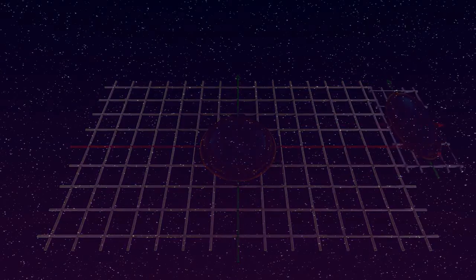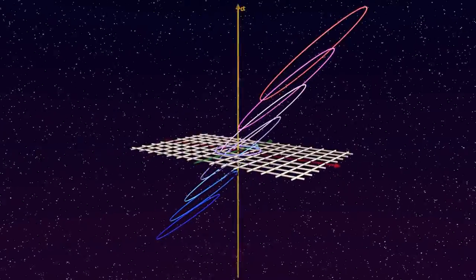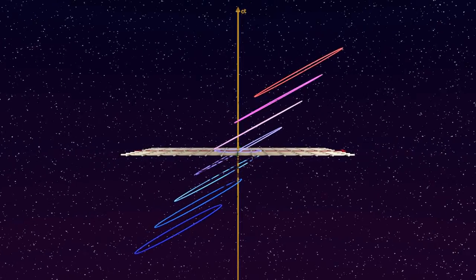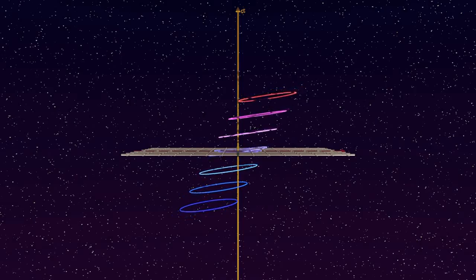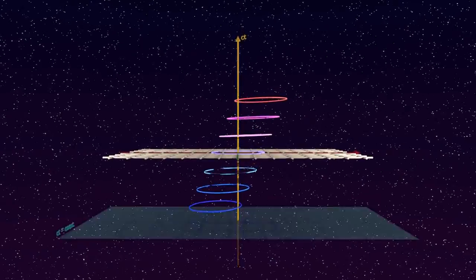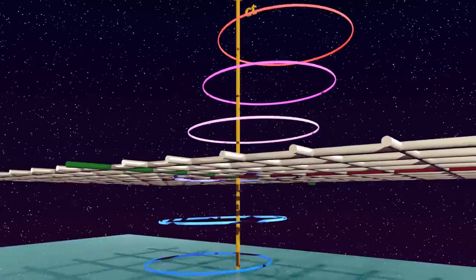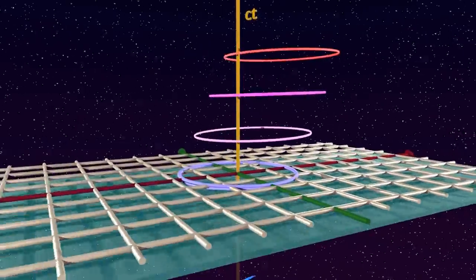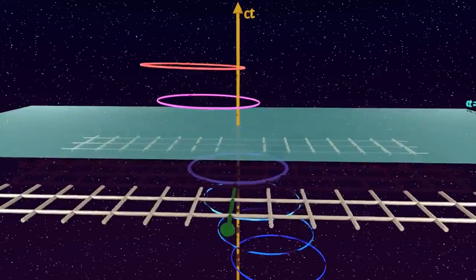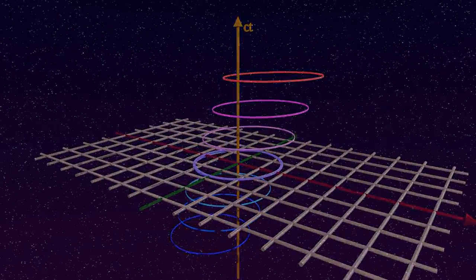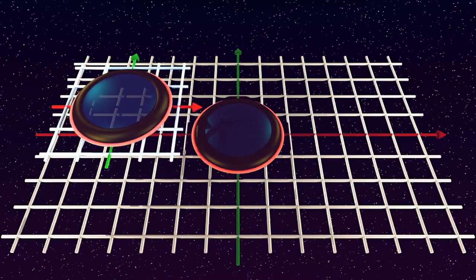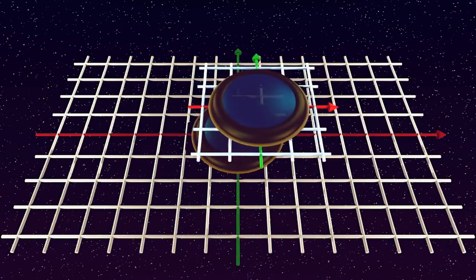But how does the relativistic perception transform into the familiar non-relativistic one? Let us look again at the space-time diagram. When the relative speed of the two labs decreases, the tilt angle and elongation of the moving flashes decrease too, until both become infinitesimal at non-relativistic speeds. The point-like flashes move faster and faster along the moving rim as its speed decreases, until the entire circular flash becomes visible instantaneously. And so, when the relative speed of the two labs is low enough, we observe them flashing at the same rate and simultaneously.